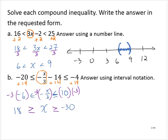It's sometimes easier to read this with the least number written first. So I'm going to flip the whole thing around. And rewrite this as negative 30 is less than or equal to x is less than or equal to 18.